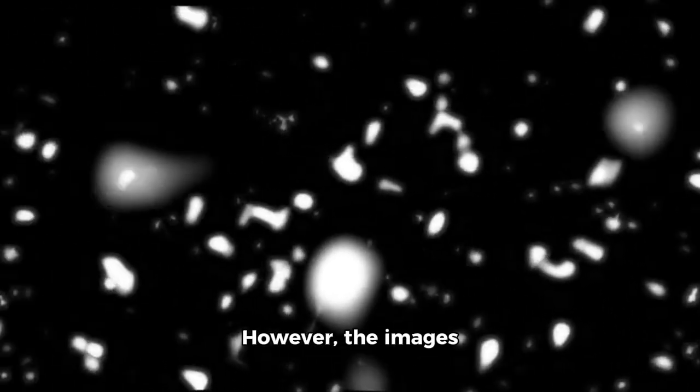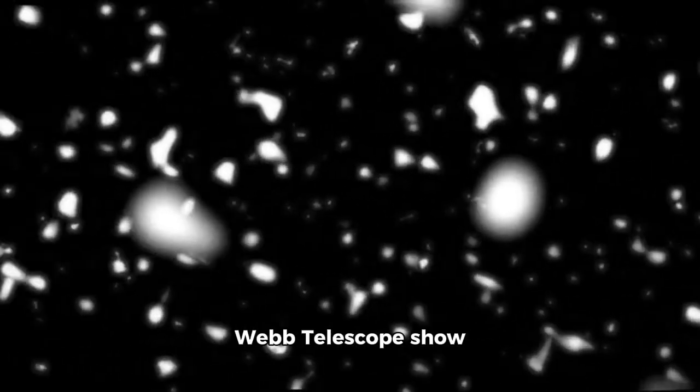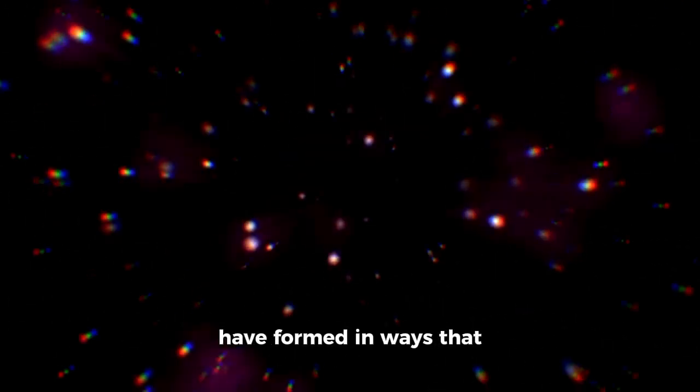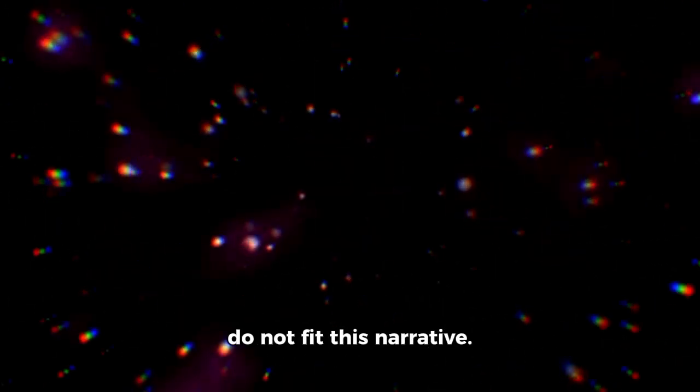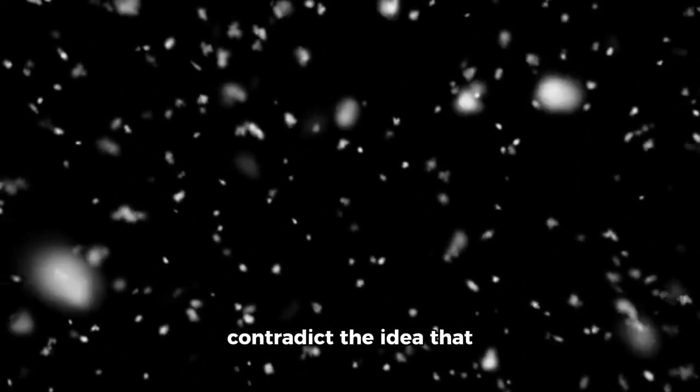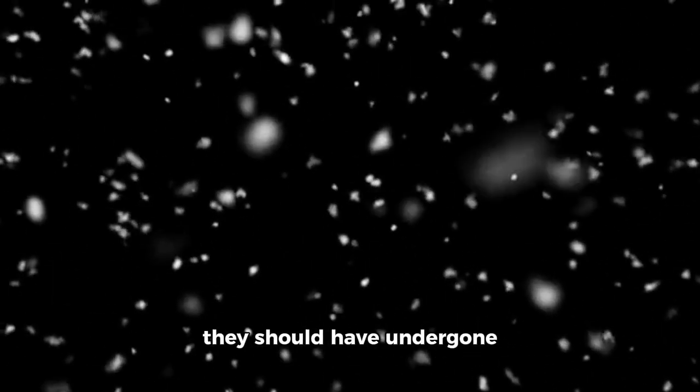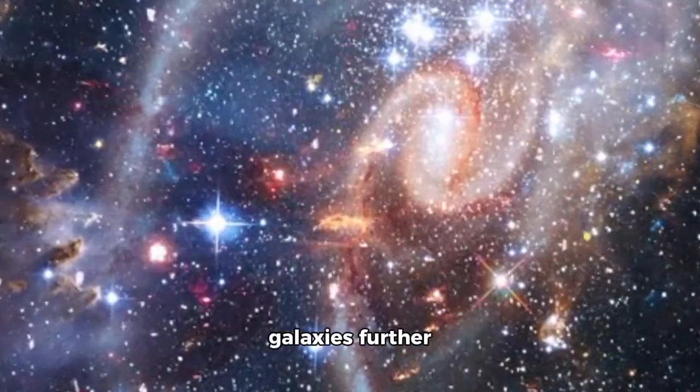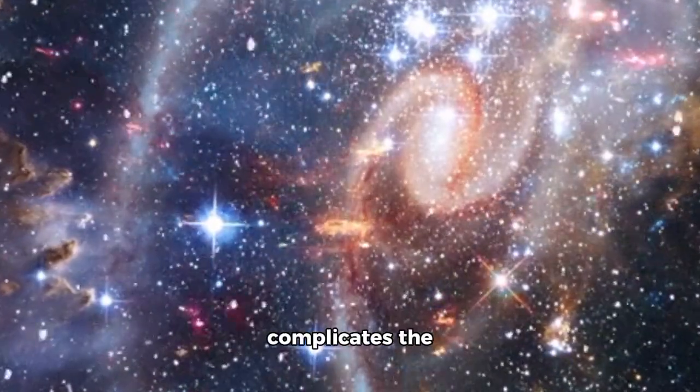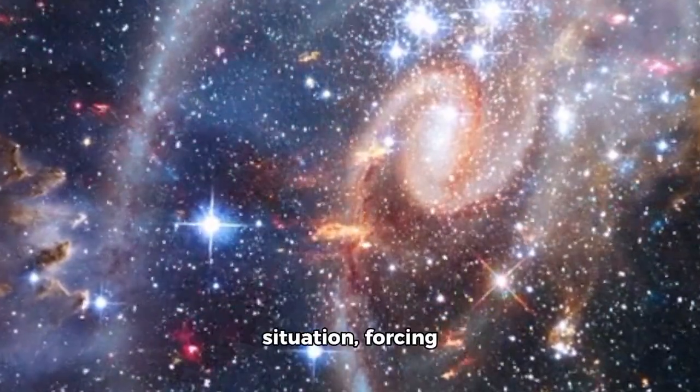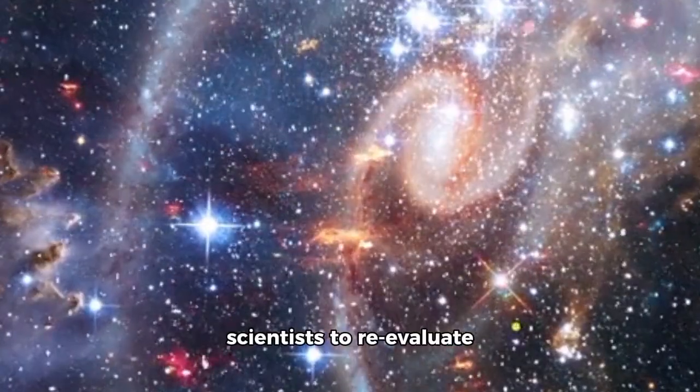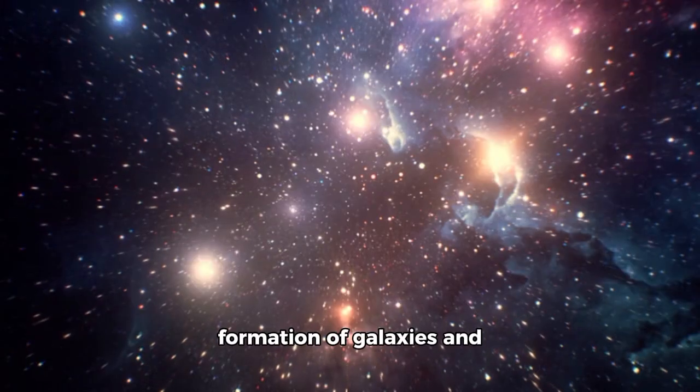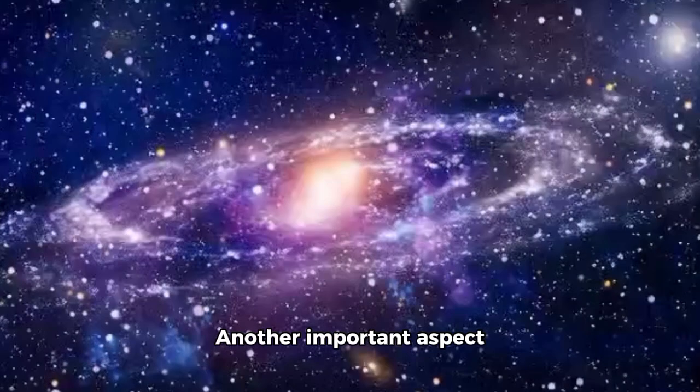However, the images provided through the James Webb Telescope show galaxies that appear to have formed in ways that do not fit this narrative. The smoothness and size of the galaxies in the telescope's images contradict the idea that they should have undergone many mergers or collisions. In addition, the unexpected age of these galaxies further complicates the situation, forcing scientists to re-evaluate the timeline for the formation of galaxies and the processes by which they evolved.